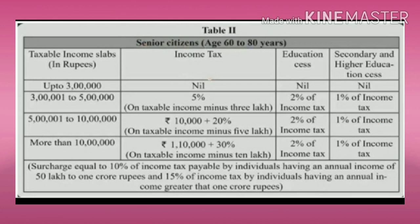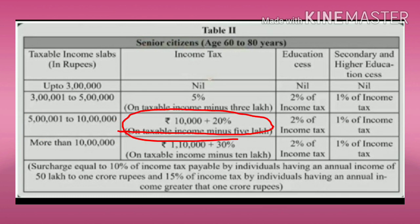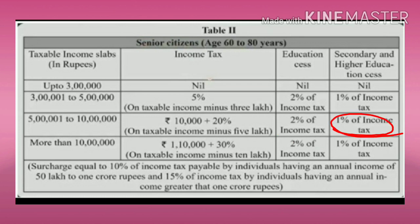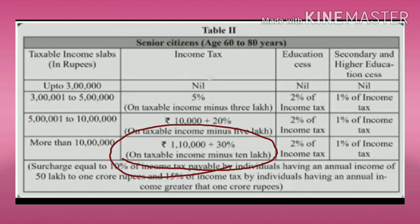If any person's annual income is more than five lakhs to ten lakhs, they have to pay rupees ten thousand plus twenty percent on taxable income minus five lakhs, along with two percent education cess and one percent secondary and higher education cess. If annual income is more than ten lakhs, they pay rupees one lakh ten thousand plus thirty percent on taxable income minus ten lakhs, plus the same cess amounts.